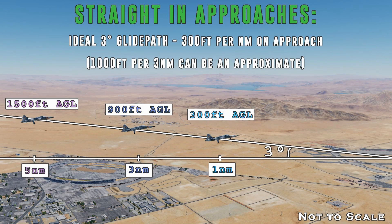There are checkpoints here at 5 nautical miles, 3 nautical miles, and 1 nautical mile. When you multiply each distance by 300, at 5 nautical miles you should be at 1,500 feet, and so on all the way down to the ground. If you create these checkpoints and follow them as you make your approach, this will help make your approach more stable.